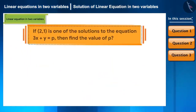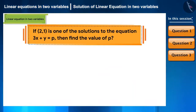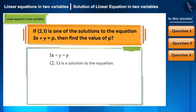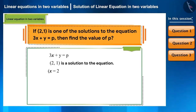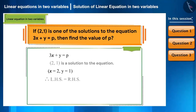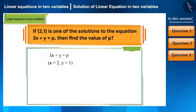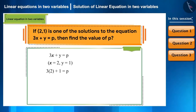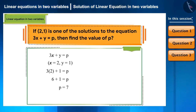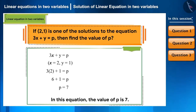Let's see one more question. If (2, 1) is one of the solutions to the equation 3x plus y is equal to p, then find the value of p. If (2, 1) is the solution, that is, if we consider x as 2 and y as 1, then RHS will equal LHS. Substituting x = 2 and y = 1: 3 multiplied by 2 plus 1 equals p, giving 6 plus 1 equals p. Therefore, the value of p is 7.